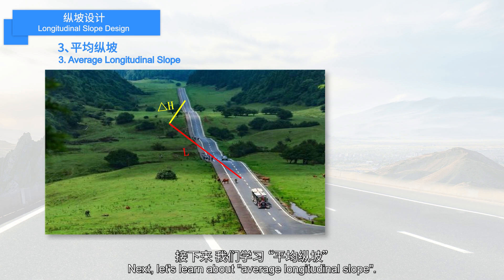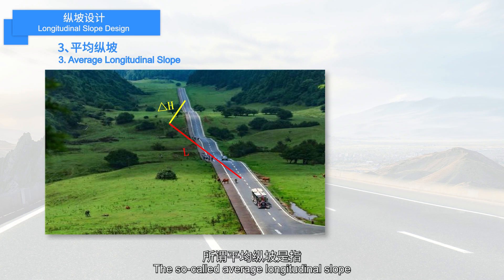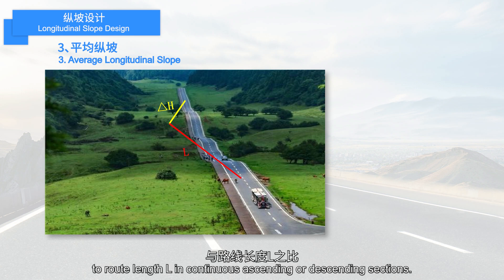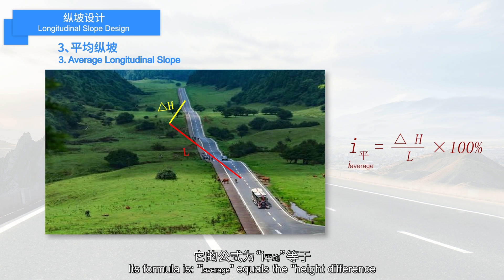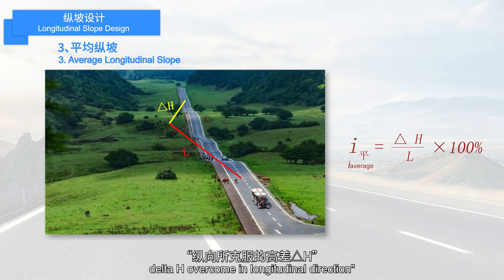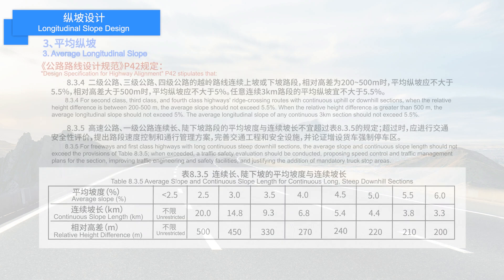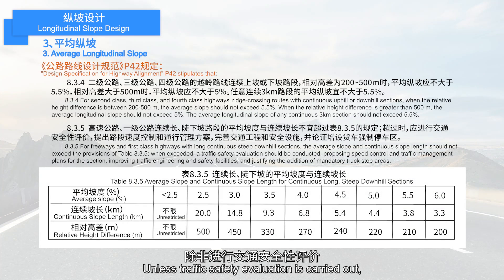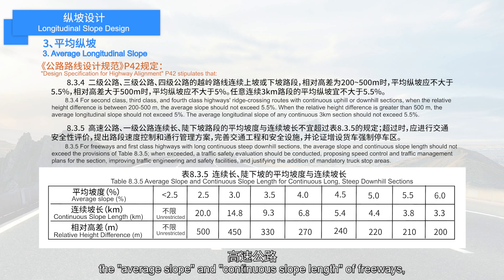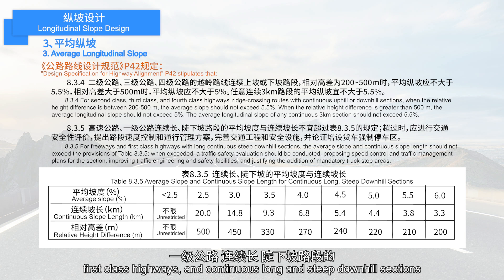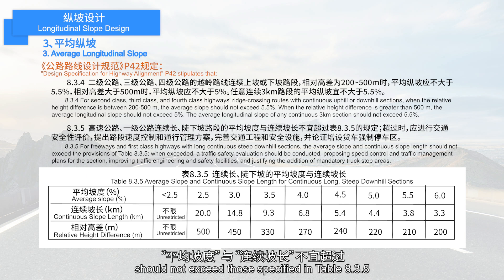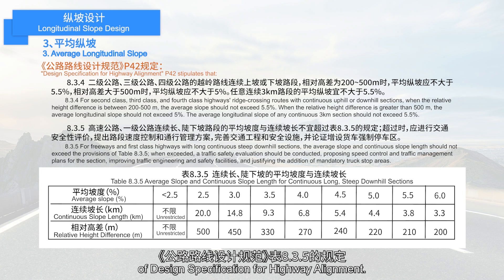Next, let's learn about average longitudinal slope. The average longitudinal slope refers to the ratio of the height difference overcome in the longitudinal direction to the route length in continuous ascending or descending sections. Its formula is: I_average equals the height difference overcome divided by route length, multiplied by 100%. Unless a traffic safety evaluation is carried out, the average slope and continuous slope lengths of freeways, first-class highways, and continuous long and steep downhill sections should not exceed those specified in Table 8.3.5 of the design specification for highway alignment.